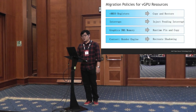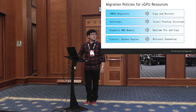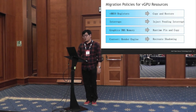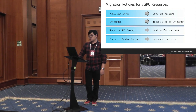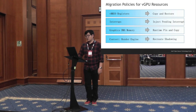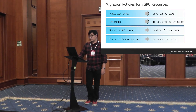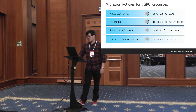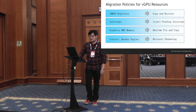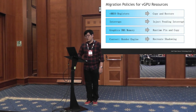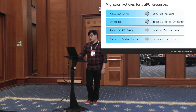This is the migration policy for Intel vGPU resources. The first is the virtual MMIO registers — we copy and restore the entire MMIO region through the new VFIO sub-region. The second is the virtual interrupts in the vGPU — on the target VM side, we inject pending interrupts after VM resume. The third is graphic DMA memory — we let QEMU query the physical-to-machine mapping from the IOMMU driver and transfer it during migration. The last part is the GPU context, including render engine context and graphic page tables, which will be recreated with shadowing on the target VM side after VM resume.